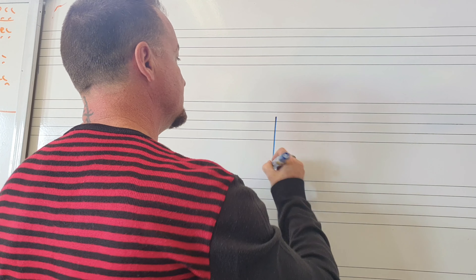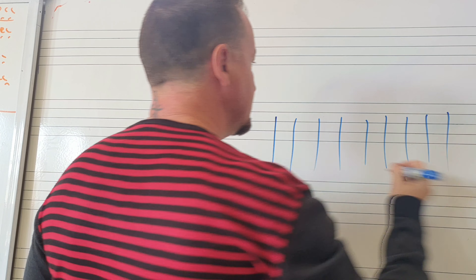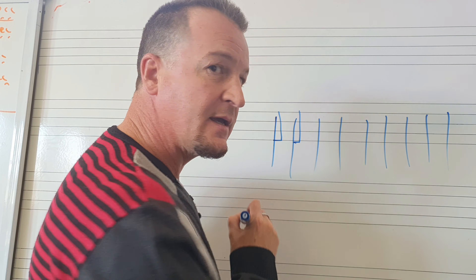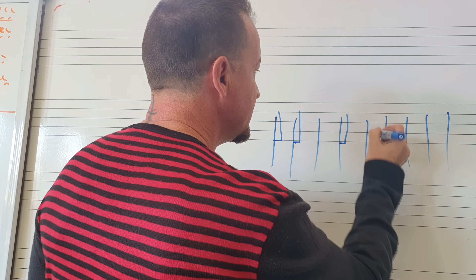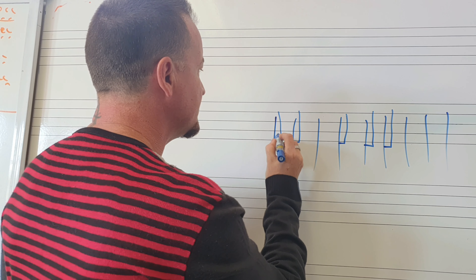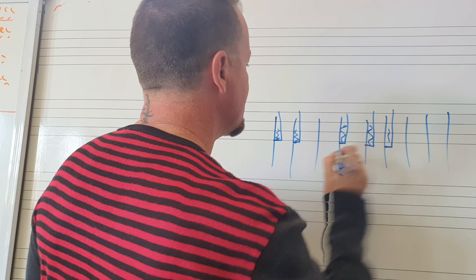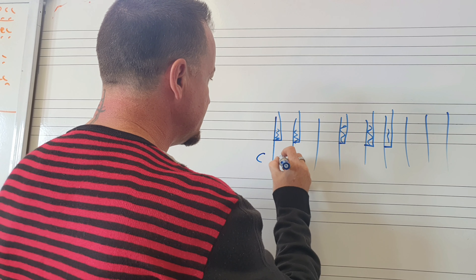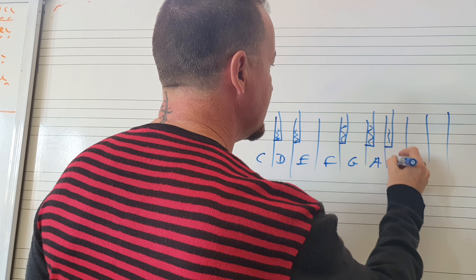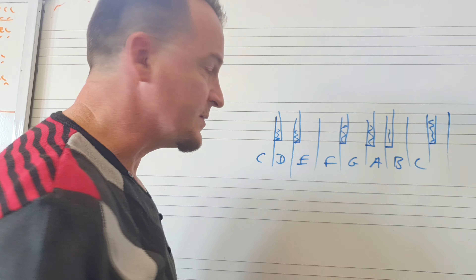I'm going to draw a piano for you. What I do is I put about eight or nine lines, and then I put the black notes in the order that they appear on the piano. So over here these would theoretically be black notes, and the ones over here would be the white notes. So this would be your C, D, E, F, G, A, B, and C. And after C, that configuration starts again.